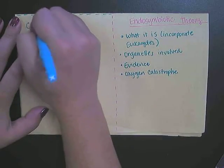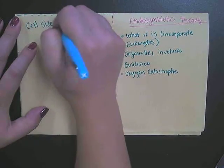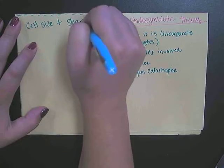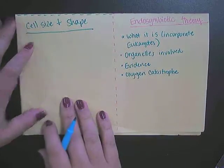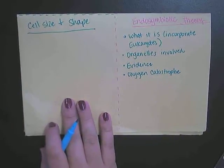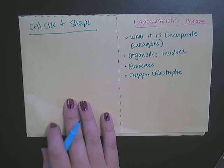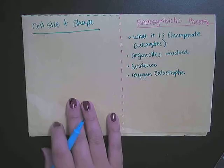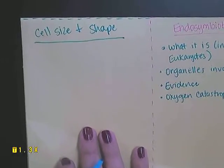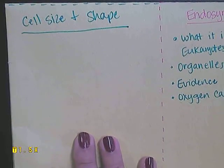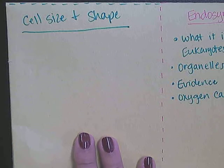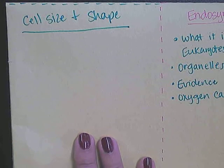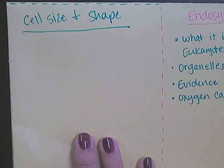We'll talk about cell size and the shape of cells. In your notebooks, you looked at the size of cells and were calculating the surface area to volume ratio, which is very important. You need to be able to do those calculations with a calculator on my exams and the AP exam, so make sure you familiarize yourself with the formula sheet and where you can find those formulas.